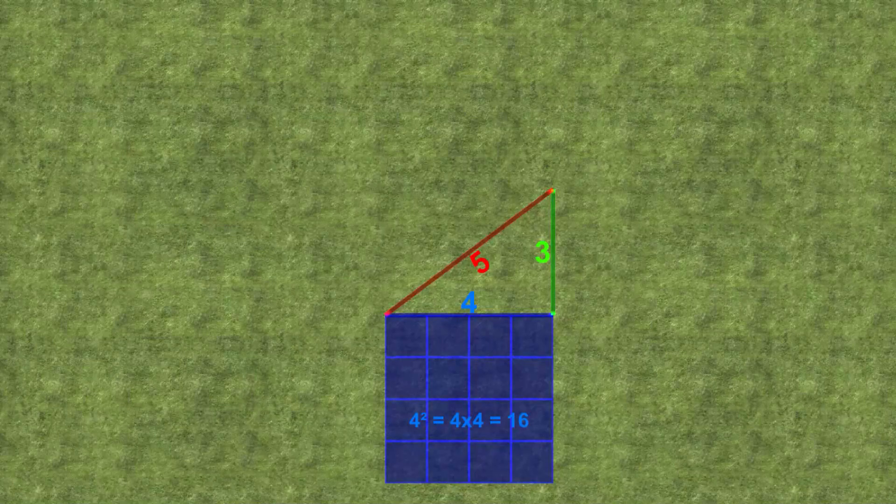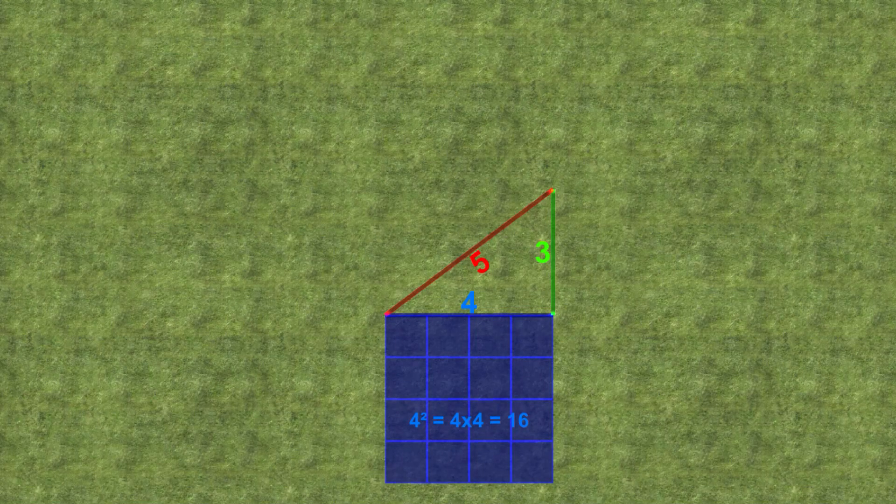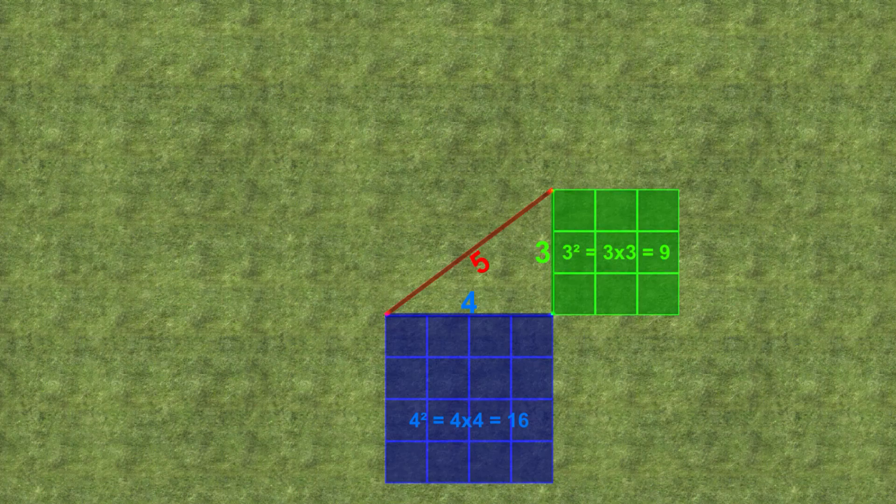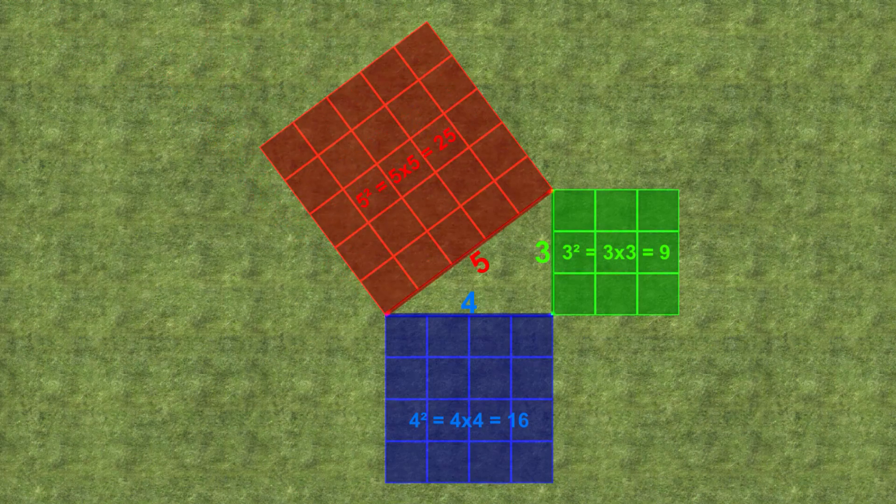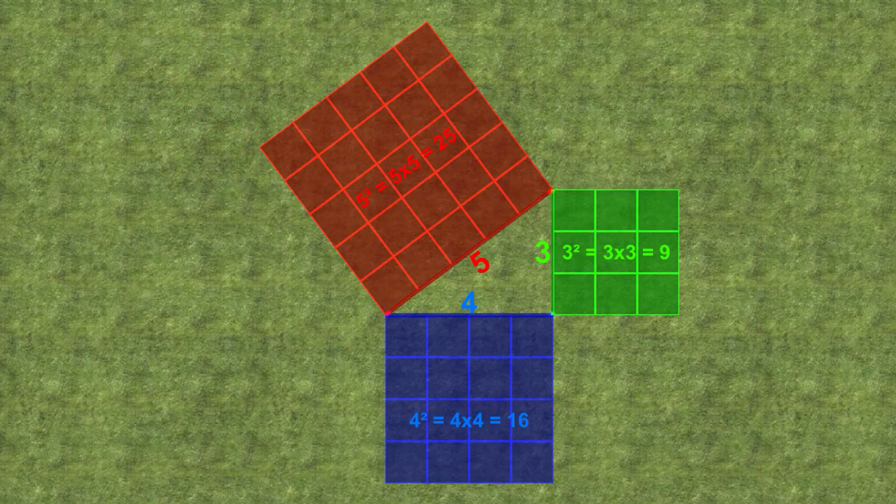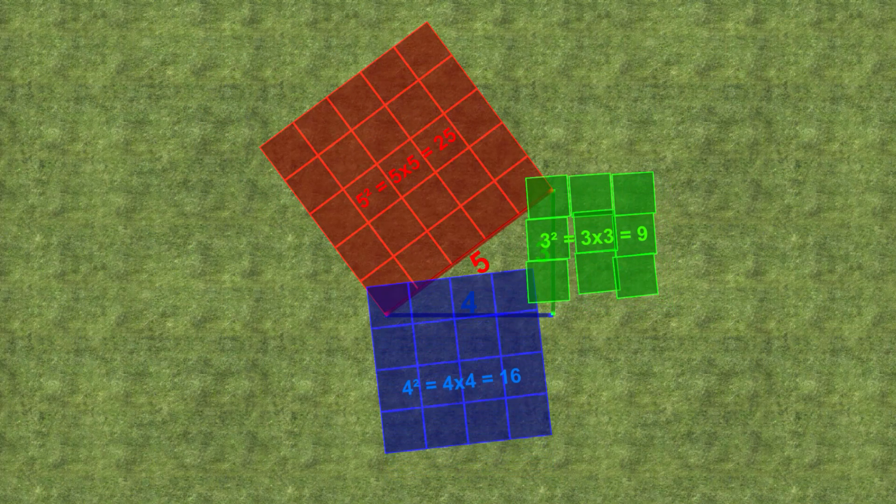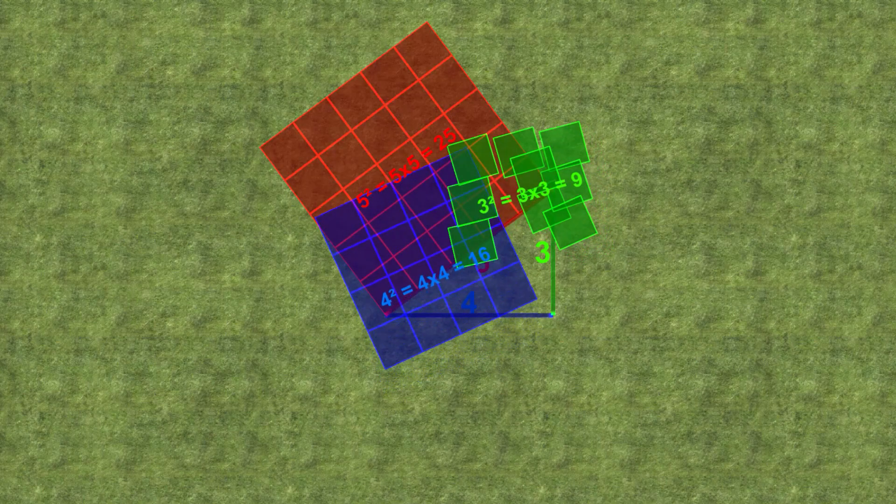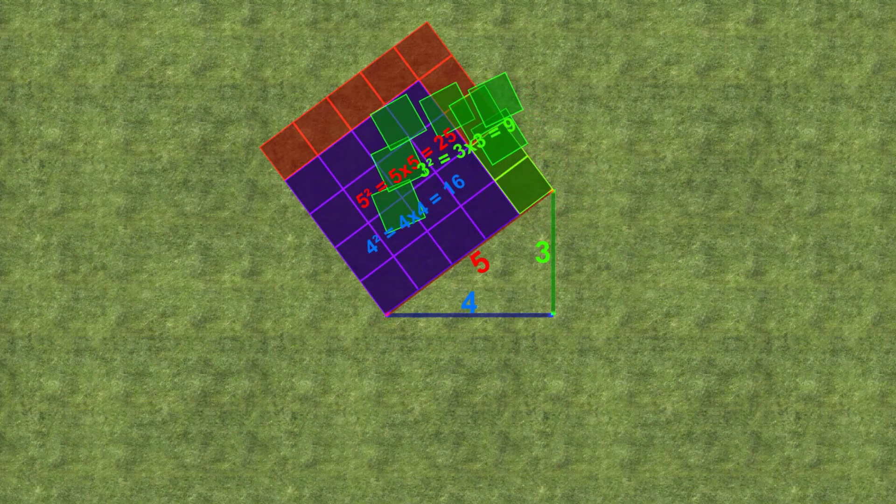Thus there are 16 blocks of 1 square meter and the area is 16 square meters. In the same way we can show that the green square area is 9 square meters while the red square area is 25 square meters. And the heart of the theory is that these two smaller squares fit perfectly into the larger square.